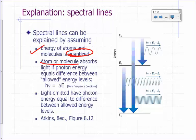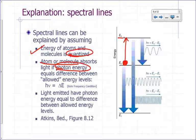If an atom or molecule absorbs light, one requirement is that the photon energy — the energy of the photon of light — must correspond to a difference between allowed levels. Let's say I have an atom with energy E2 right here. In order for the atom to gain energy, the next higher allowed level is E3. In order for it to go from E2 to E3, the photon energy that must come in must be equal to E3 minus E2.